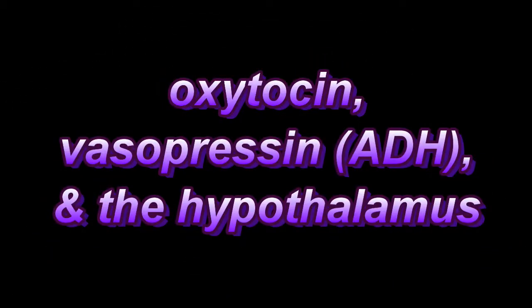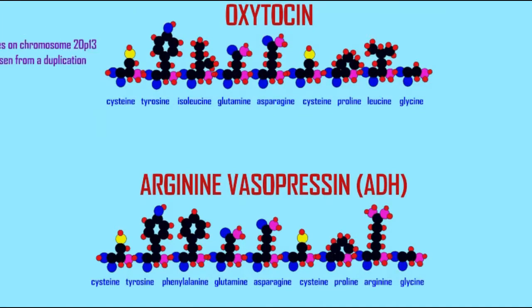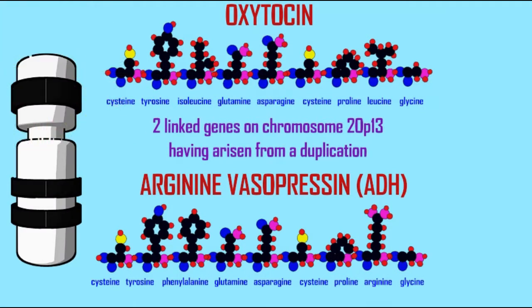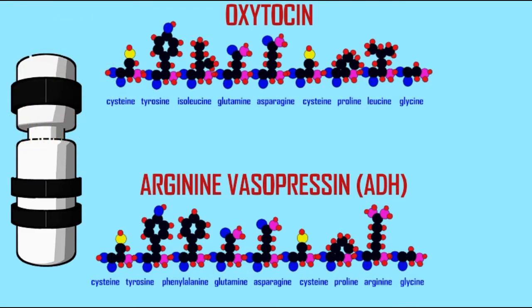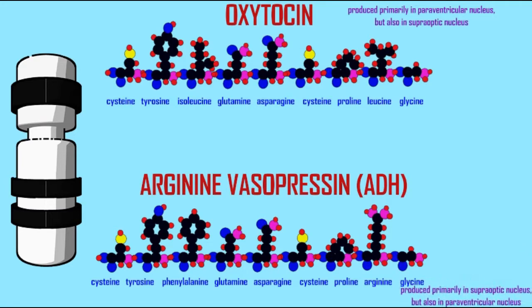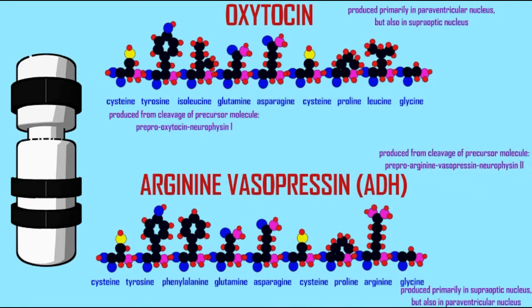Oxytocin and arginine vasopressin, also known as ADH, the antidiuretic hormone, have a lot in common. They are duplicates of an ancestral gene, and so they share sequences in common. They are nine amino acids long, these neuropeptides, and many of the amino acid positions are the same. They are located in the same region of chromosome 20, P13.